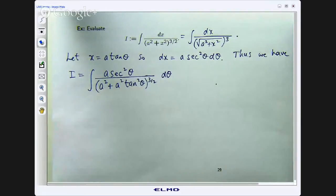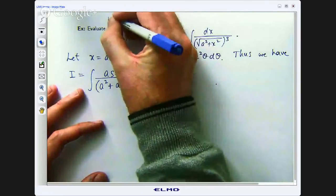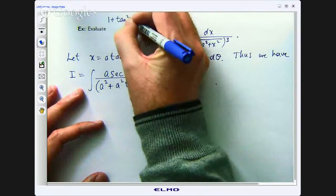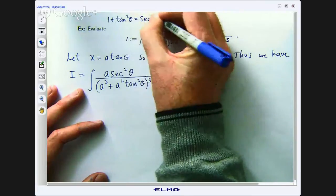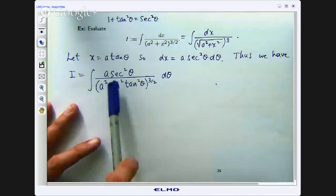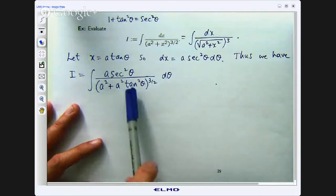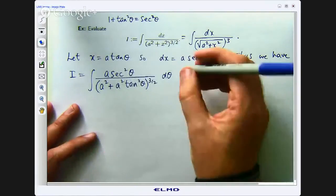So a squared plus a squared tan squared theta. We can use the relationship between tan squared and sec squared to get that. So we know that 1 plus tan squared theta equals sec squared theta. So if I have got a common factor of a squared I can either bring that out the front or I can factor it out and replace 1 plus tan squared with sec squared.